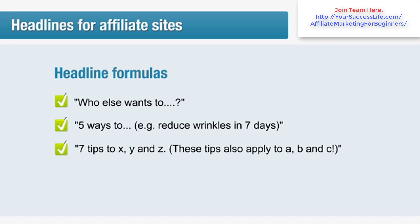Or 'Seven tips to X, Y or Z' — for example, 'These tips can also apply to A, B and C.' Again, you've got that nice number there. Seven tips — doesn't that sound like an easy read? If you've done your research, you will also know exactly what your readers' concerns are, and you would have hit six of them in that one header: X, Y, Z, A, B and C.